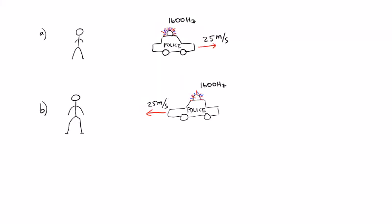The siren of a police car at rest emits a 1600 Hertz frequency. So what frequency will the person hear if the person is at rest and the police car is moving at 25 meters per second away from this person in case A, and towards the person in case B?